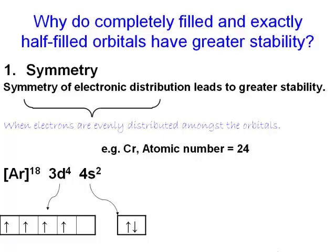As you can see, one of the 3d individual orbitals is empty, while the others are half-filled. The 4s orbital has two electrons. This arrangement of electrons amongst the 3d and the 4s orbitals is considered to be unsymmetrical, because the electrons are not evenly distributed amongst these two orbitals.